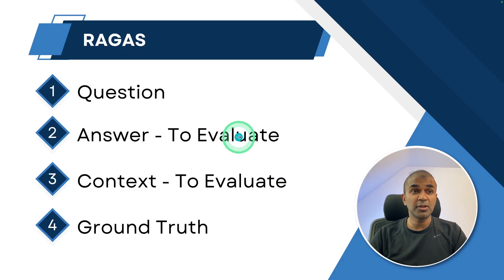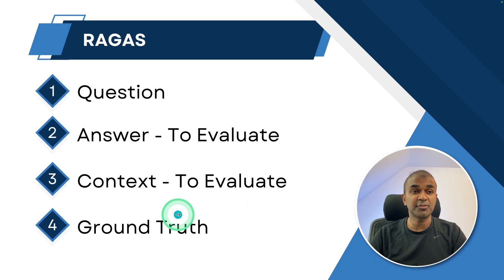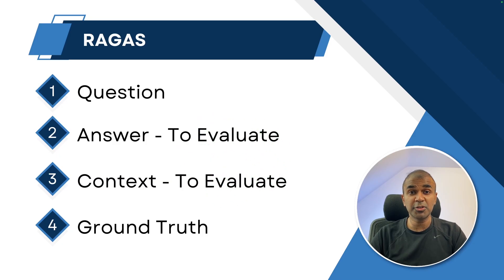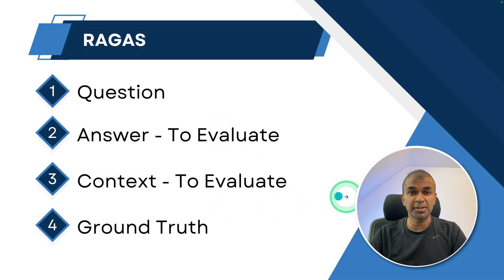So the first step is to have a question and ground truth — the real answer. With those two things, we are going to evaluate the generated answer and context. Now I'm going to show you a basic example with all these four components.